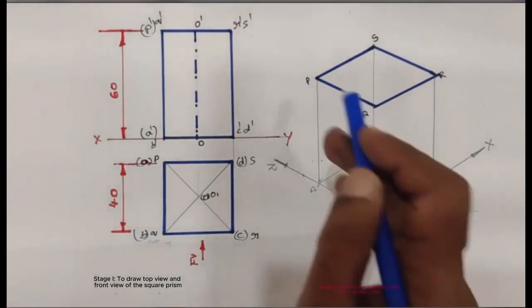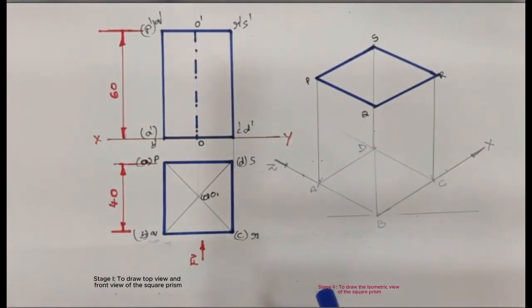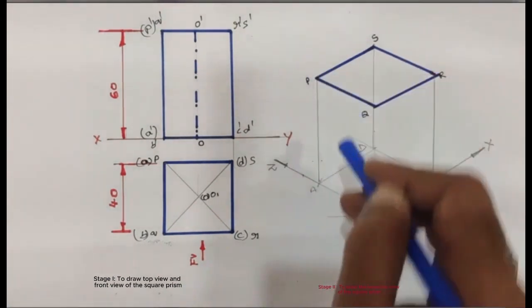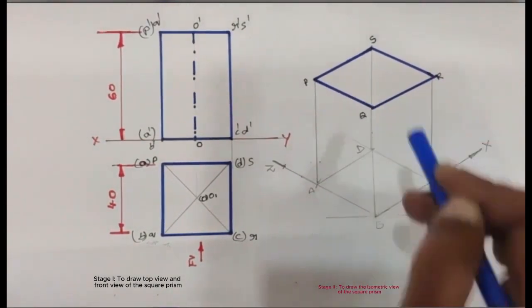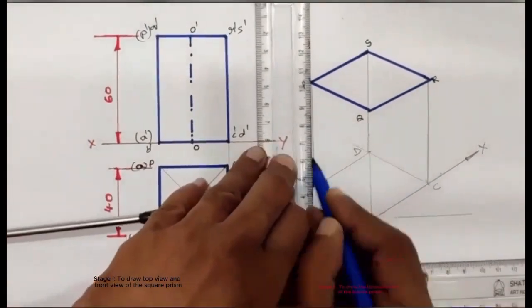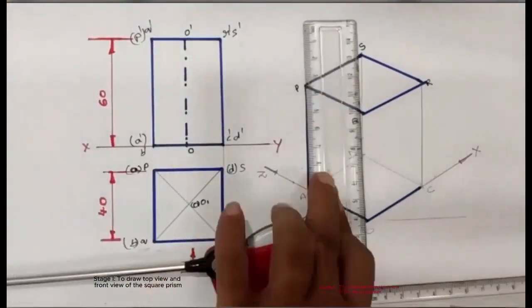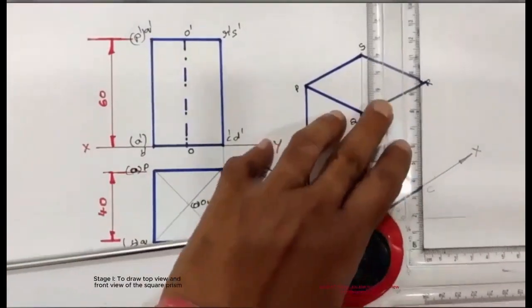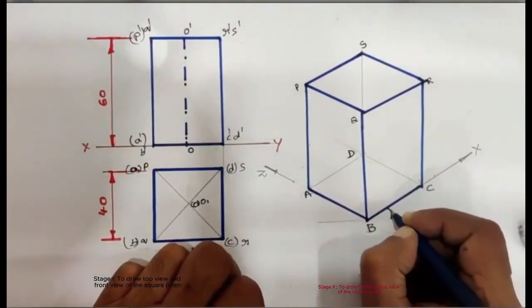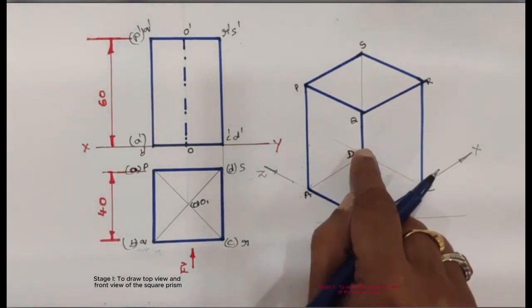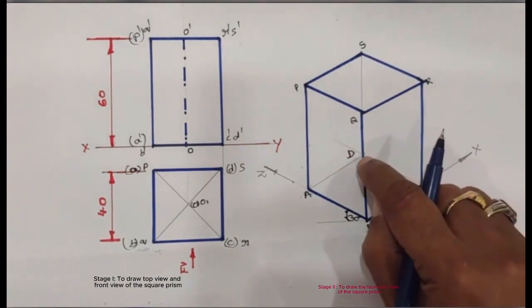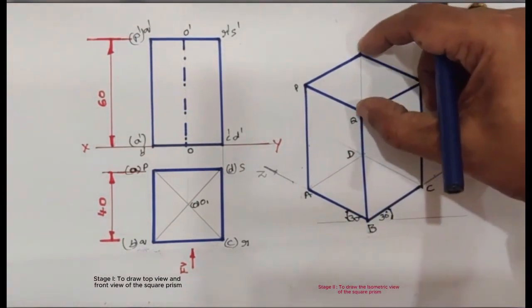Then darken the outside lines of the square prism — say AP, AB, BC, CR, and BQ. The lines which are inside the square prism are drawn as hidden lines, say AD, DC, and a portion of the DS line.